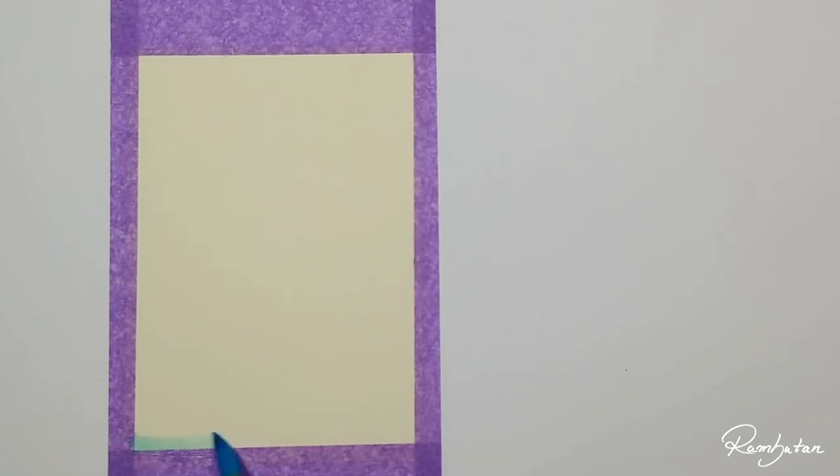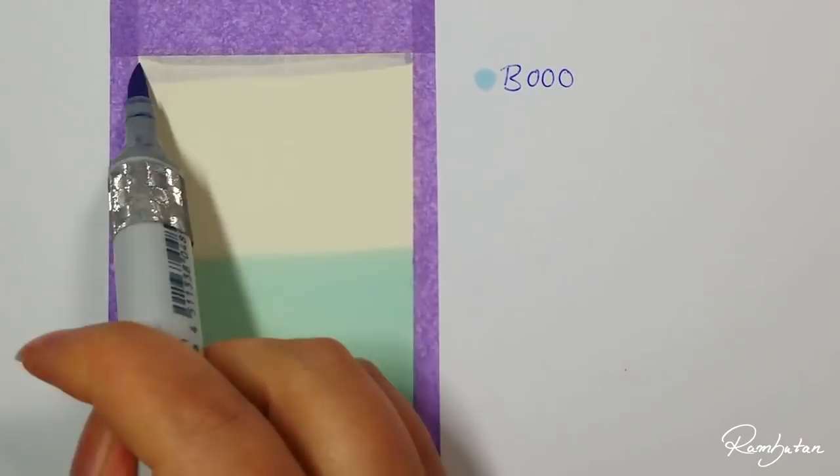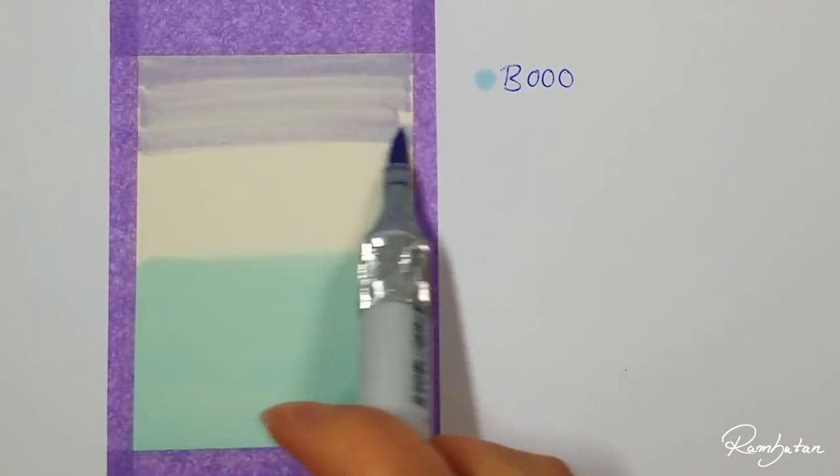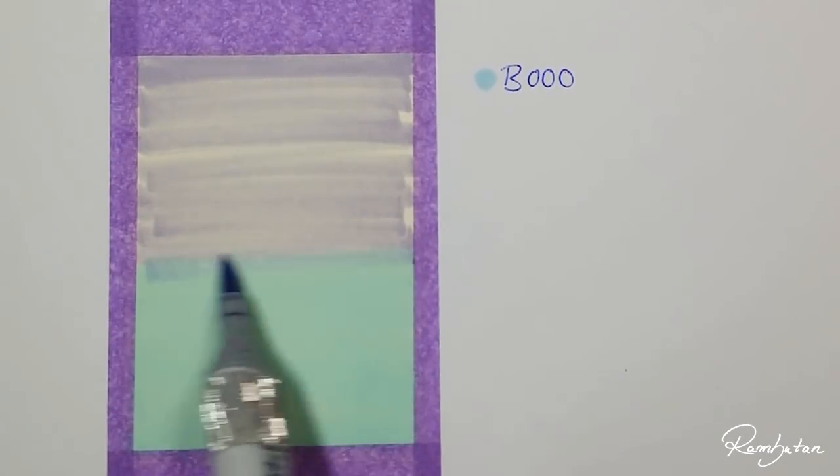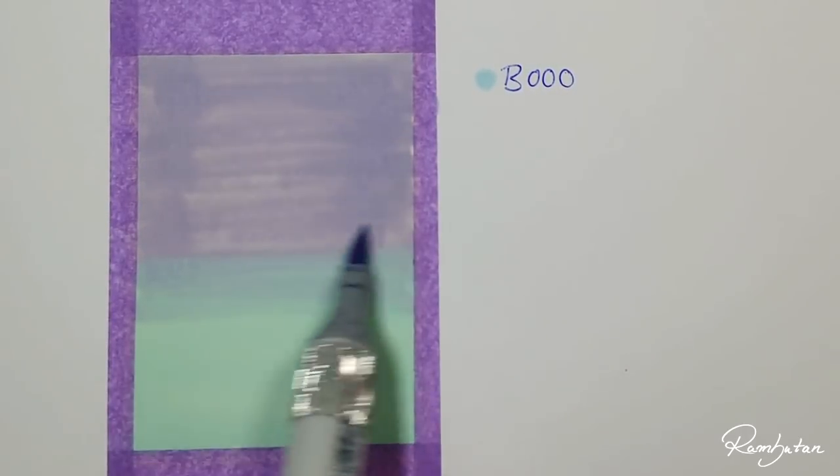Start with B000 pale blue and fill the lower half of the background. Continue with BV01 viola and start from above to below, and blend it over the bottom half. Then use B000 again and blend both colors.